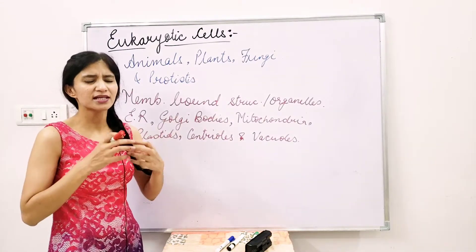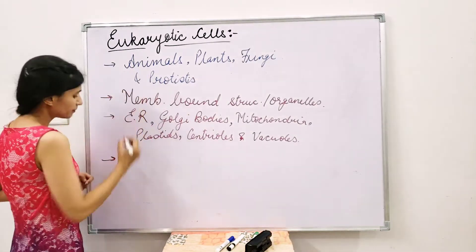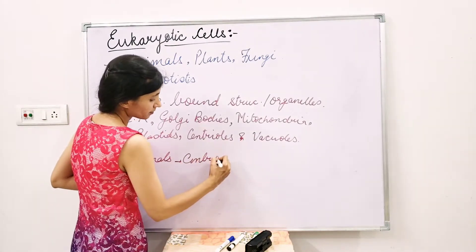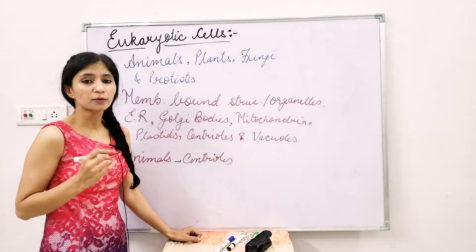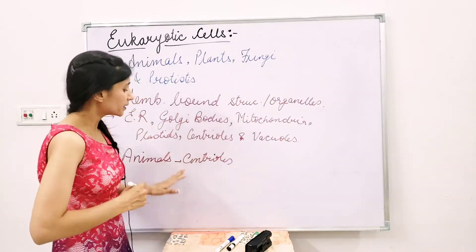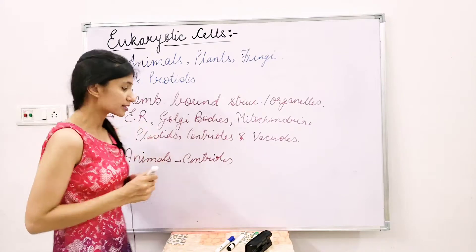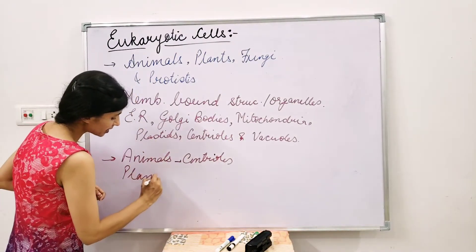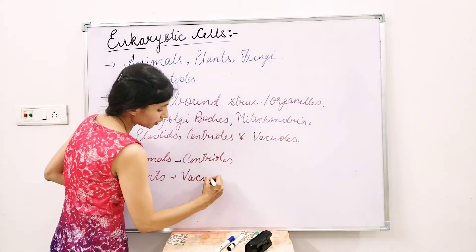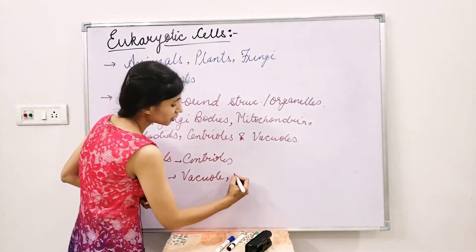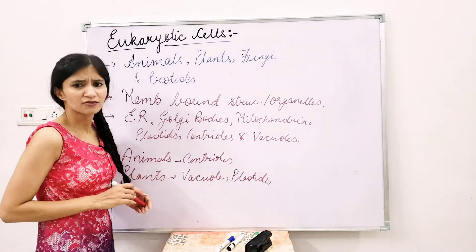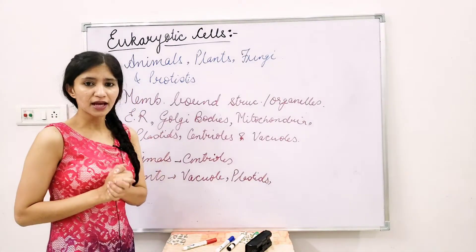Animals and plants still have certain different organelles. For example, centrioles are present in animal cells but are not present in all plant cells. In plant cells, you will find a central vacuole — a permanent vacuole — as well as plastids, which are present only in plants, and chloroplasts. These are some of the key differences between animal and plant eukaryotic cells.